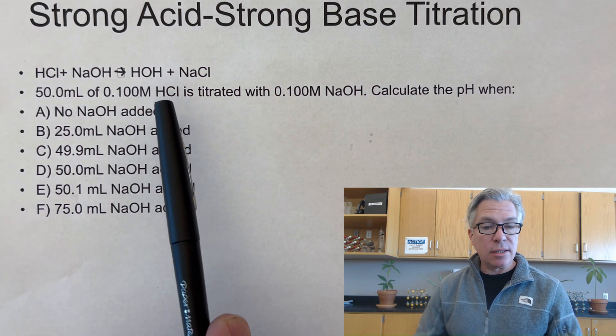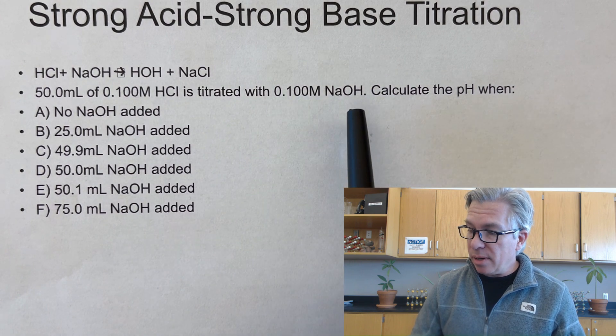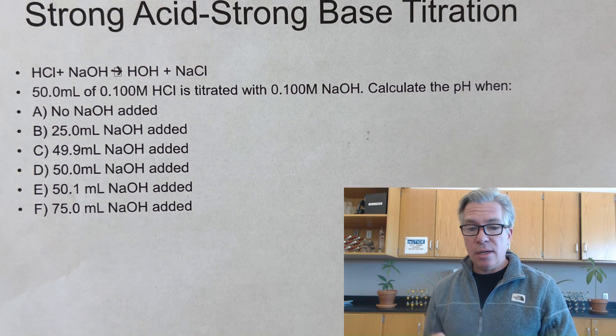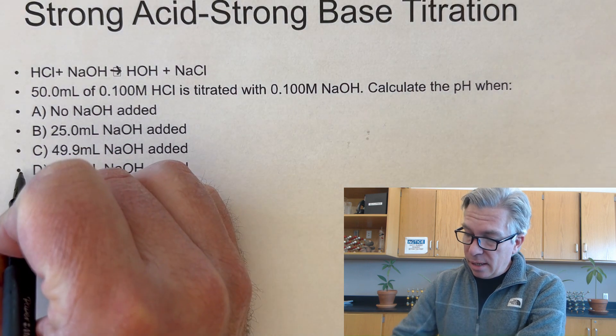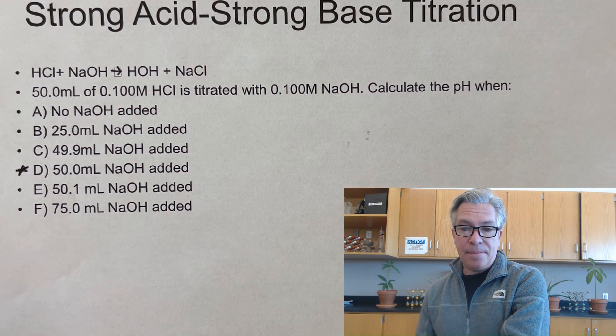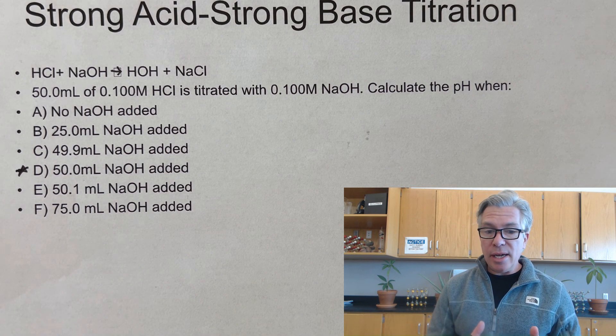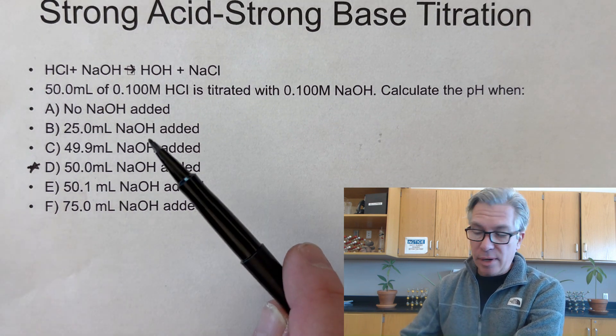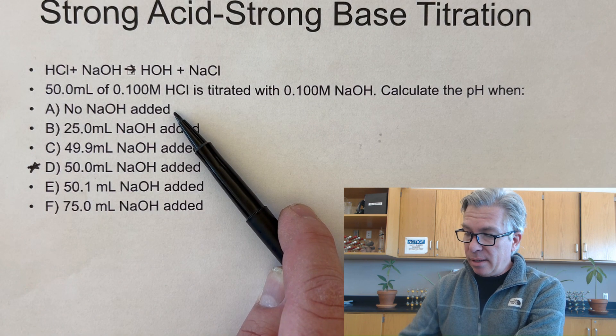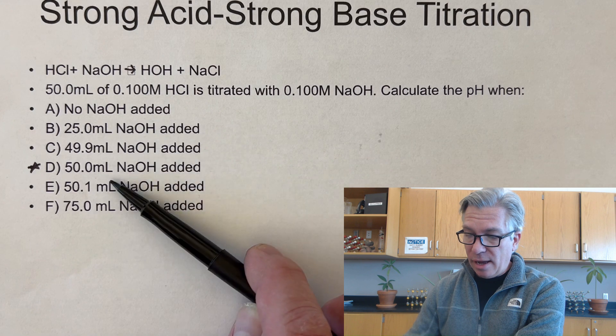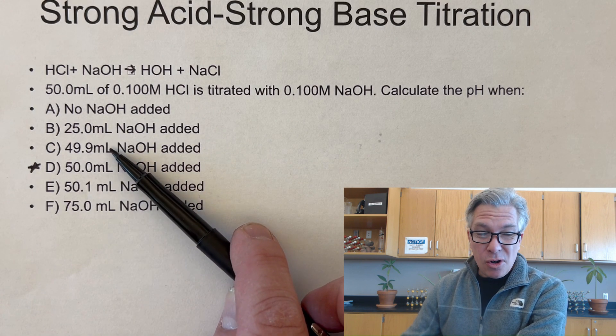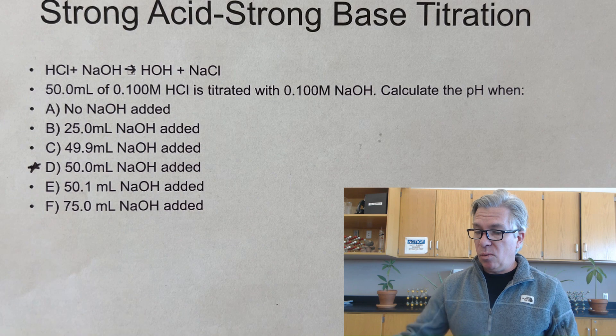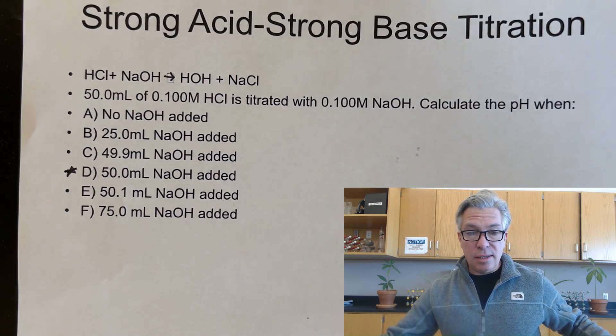50 milliliters of 0.1 molar HCl, let's assume we have that and we're going to titrate it with 0.1 molar NaOH. Now since the molarities are the same and it is a one-to-one ratio we would expect 50 milliliters of NaOH being added and we would expect that to be the endpoint. Let's follow the pH during the whole titration. I want to actually calculate the pH before any NaOH has been added, after 25 milliliters has been added so we're halfway to the equivalence point, 49.9 we're almost there, there's the equivalence point and then a little bit beyond.